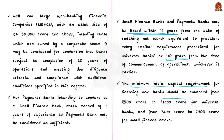The next recommendation is enhancing the minimum initial capital requirement for licensing new banks. The IWG recommended that the minimum initial capital requirement should be enhanced from the existing 500 crore rupees to 1000 crore rupees for universal banks, and from 200 crore rupees to 300 crore for small finance banks.